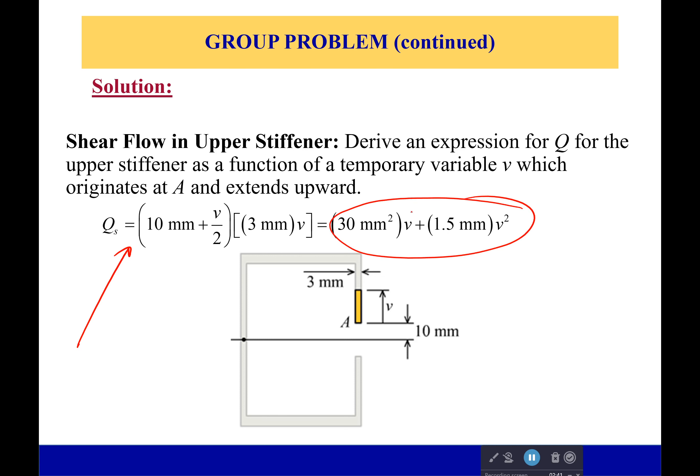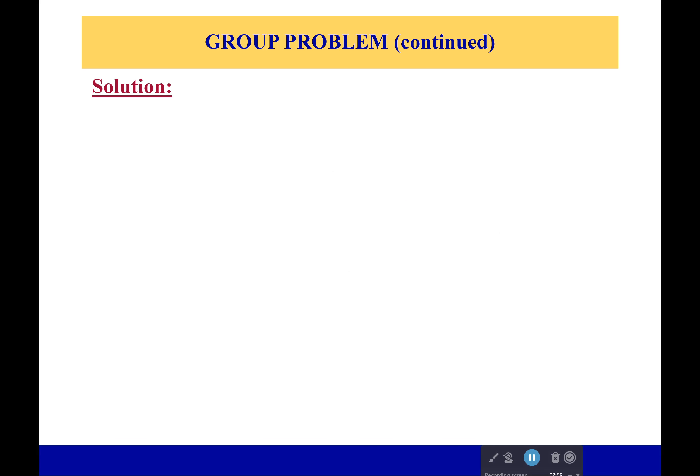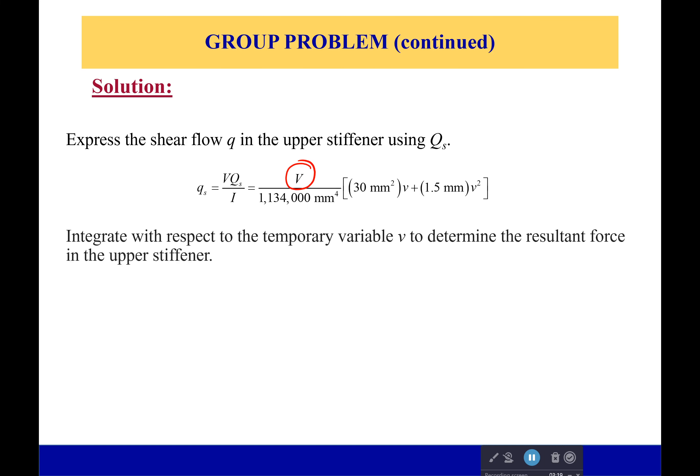So I set up my equations. This is my first moment of area, which takes into account wherever I am, that is going to be the centroid right here. And then the area is going to be this right here. Multiply out and I get that value. So now that I've done that, I plug everything in there. So I have my shear force, which I don't have a value for that yet. That's okay. You don't need a value for it to start because when it comes to calculating the shear center, it all cancels out. So I have this equation. And now I have to integrate with respect to that temporary variable V right here.